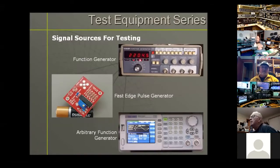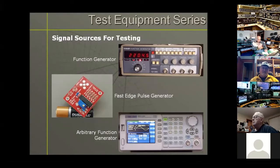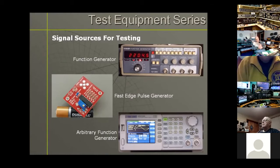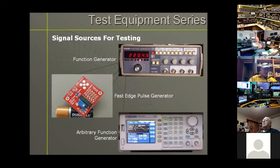Here we have some examples of signal sources. At the top is a function generator that does sine, square, and triangle waves up to 2 MHz — I got this at Nearfest for $20. In the center is a fast edge pulse generator kit that Alan W2AEW uses to test his stuff. At the bottom is an arbitrary function generator, the modern digital equivalent to the function generator, which can produce a wide variety of waveforms. You can even capture waveforms on your oscilloscope, export them to this device, and it will reproduce those waveforms for further testing.